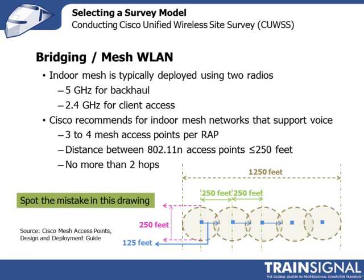When you think about an indoor mesh, you'll typically use the 5 GHz for the backhaul between the access points and the 2.4 GHz for the client access. Now, the thing to watch for in the indoor environment is whether or not you're going to support voice. Earlier on, I told you that in a non-voice network, Cisco recommends no more than three or four hops.